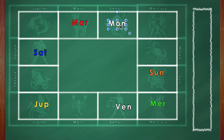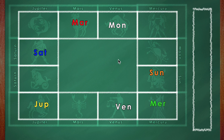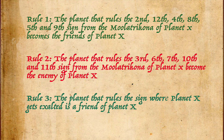The moon will not treat any planet as its enemy because it has to go to each one of their houses. Rule number one is: note the signs which are the 4th, the 2nd, the 12th, the 5th, the 9th and the 8th from the Mulatrikona. The planet who rules these houses are its friends. To remember this, you can use 2-12, 4-8, and 5-9. The 5-9 are trikonas, 4-8 and 2-12 are easy to remember because they rhyme. The planet who rules these houses from the Mulatrikona are always that planet's friends.